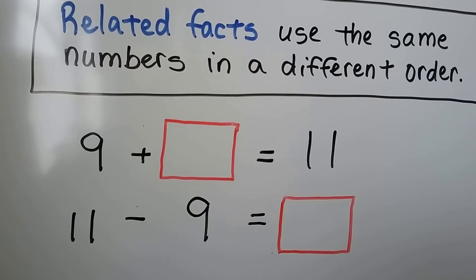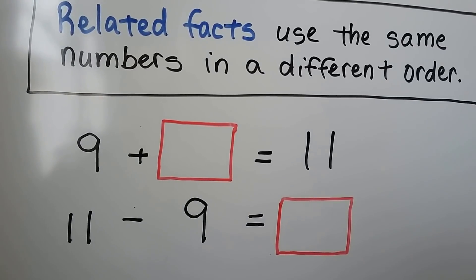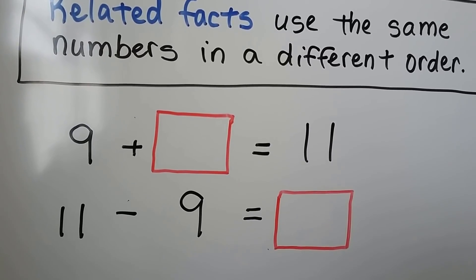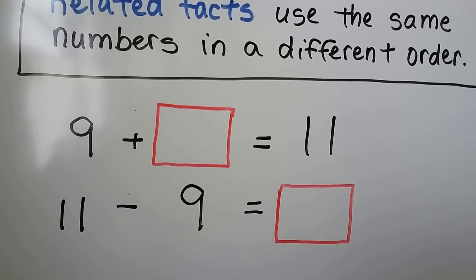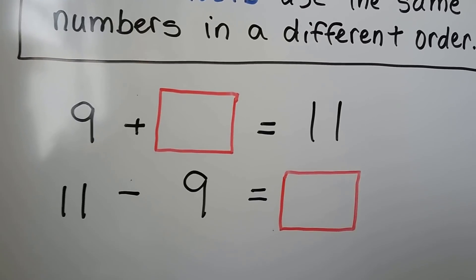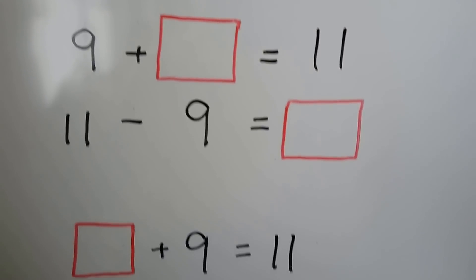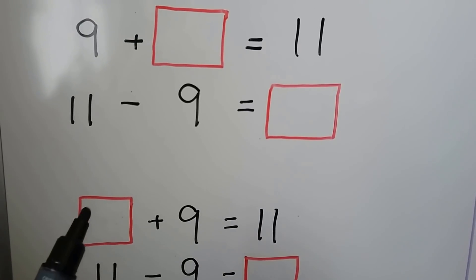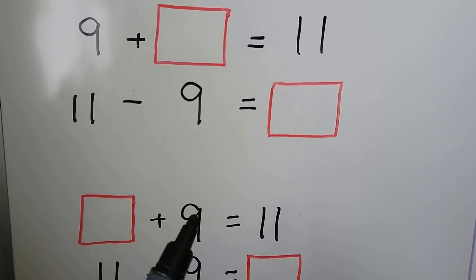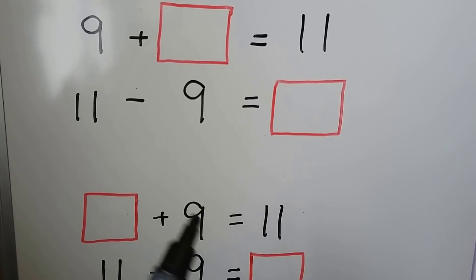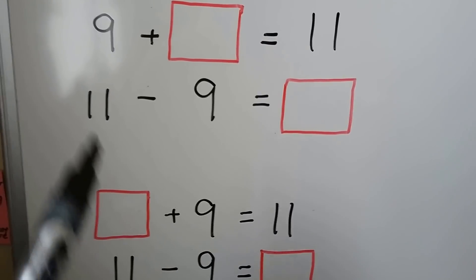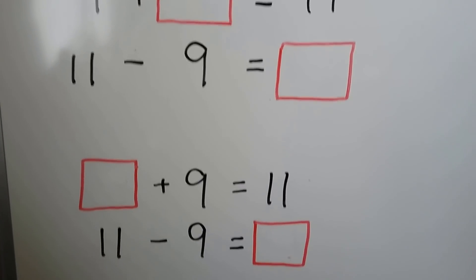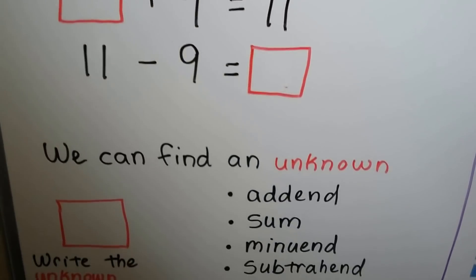9 plus an unknown number is equal to 11. We can use the related fact: 11 minus 9 is equal to the unknown number. Because we can add in any order, we can say the unknown number plus 9 is equal to 11, and trade places — putting the cube in the front.